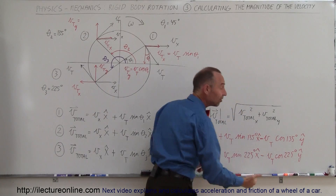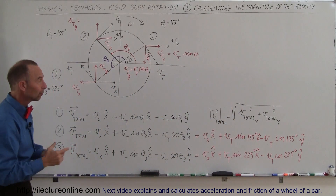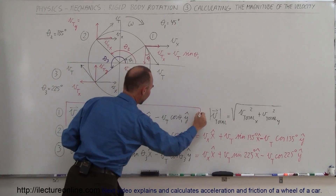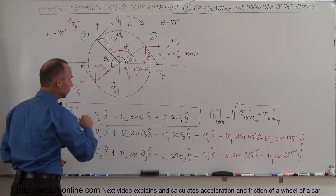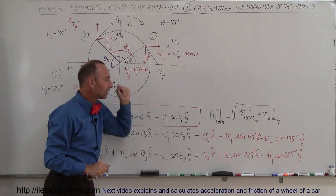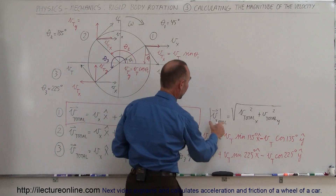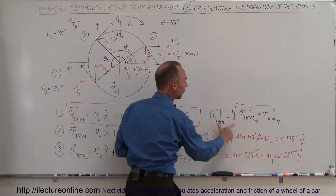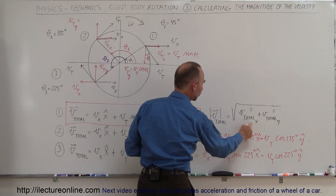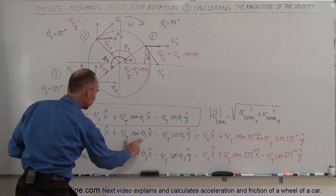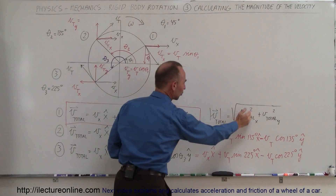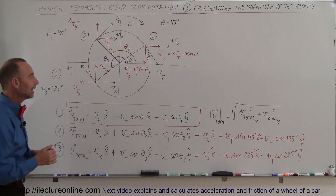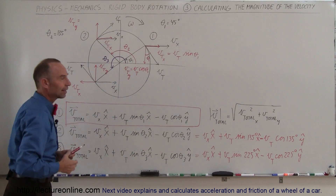The magnitude and sign both work out correctly. This is indeed the equation that describes the velocity in vector format anywhere along the wheel, when you take the angle theta with respect to the positive x-axis. To find the magnitude of the total velocity combining translational and tangential components: square the total x component (v sub x plus v tangential times sine of theta) and add it to the square of the total y component, then take the square root. That's how you find the magnitude of the velocity anywhere along a rotating body.